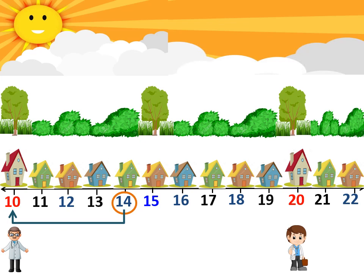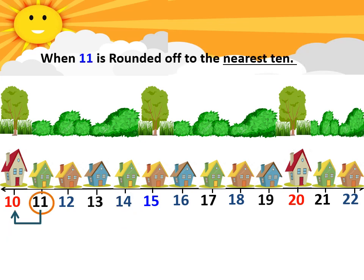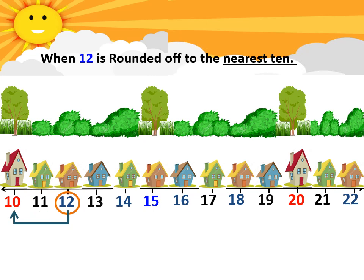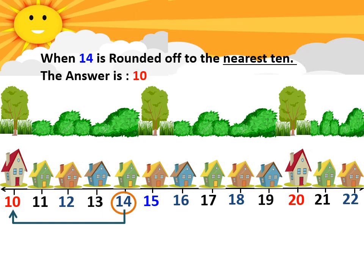This story is similar to our concept of rounding off. If we want to round off 11 to its nearest 10, we take it to the tens closest or nearest to the number. Therefore, 11 is rounded off to 10. 12 is also rounded off to the nearest tens, which is 10 again. Similarly, if we round off 13 to the nearest 10, it becomes 10. Number 14 is also rounded off to number 10.